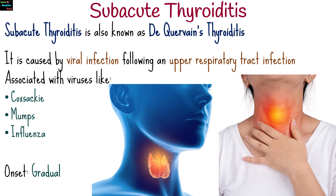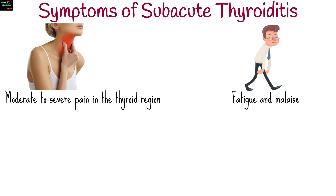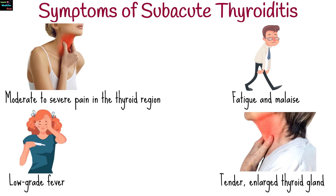It is of gradual onset. Symptoms of subacute thyroiditis include moderate to severe pain in the thyroid area that may radiate to the ears or jaw, fatigue and malaise, low-grade fever, and a tender, enlarged thyroid gland.